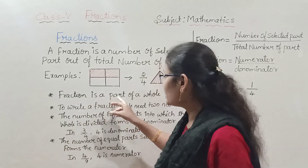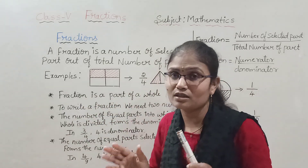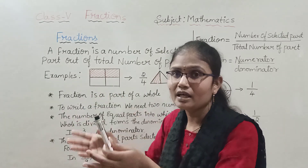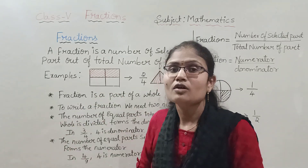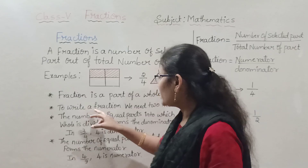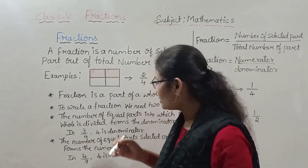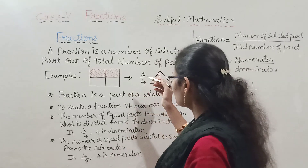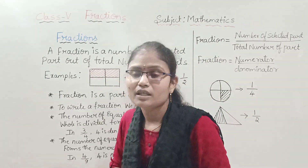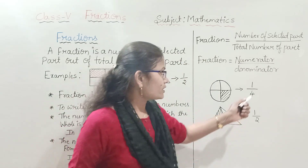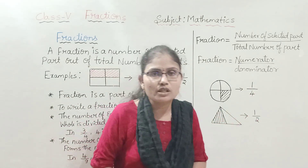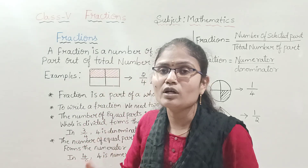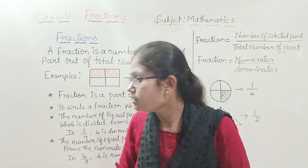A fraction is a part of a whole. You take the whole figure, divide it, and then represent what fraction has been selected. To write a fraction we need two numbers — an upper number and a lower number. For example, 1/4 and 1/2 both use two numbers to represent the fraction.